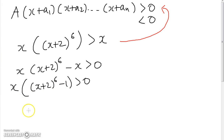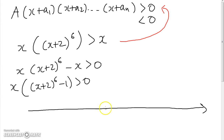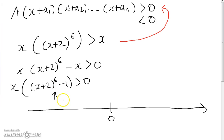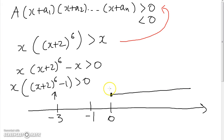The first thing you want to do when you have a polynomial in this form is draw a number line, and on this number line put all the roots of the polynomial. x = 0 is clearly a root, and we also have roots when (x + 2)^6 minus 1 equals 0, which happens when x = -1 and when x = -3. Placing these roots on the number line partitions it into segments.